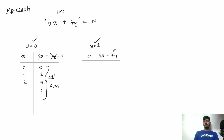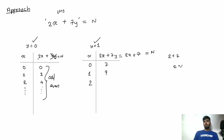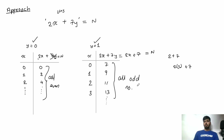Now if we keep y = 1, the expression becomes 2x + 7 = n. For x = 0 we get 7, for x = 1 we get 9, for x = 2 we get 11, for x = 3 we get 13, and so on. So with y = 1 we can get all odd numbers greater than or equal to 7.